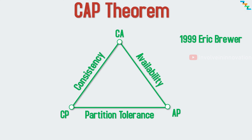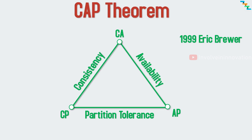That does not mean we are completely giving up consistency or availability in distributed systems. If your system needs 100% availability, then you can't achieve the same 100% consistency — there will be some inconsistencies in the data across nodes and it will become eventually consistent. The same goes with availability: if you want 100% consistency, you need to give up some percentage of availability, as the system might not be available until the data across nodes becomes consistent.